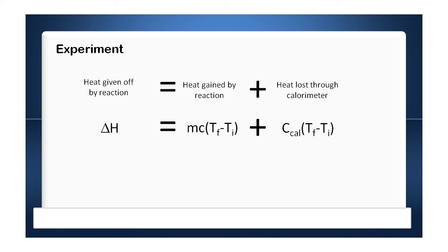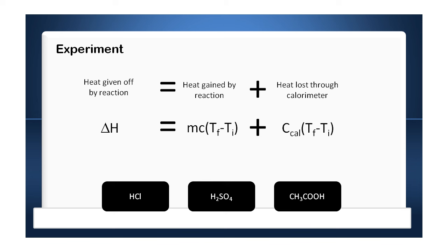We can repeat this for different acids. So for example, hydrochloric acid, sulfuric acid, ethanoic acid. And these will all give different results for different readings.